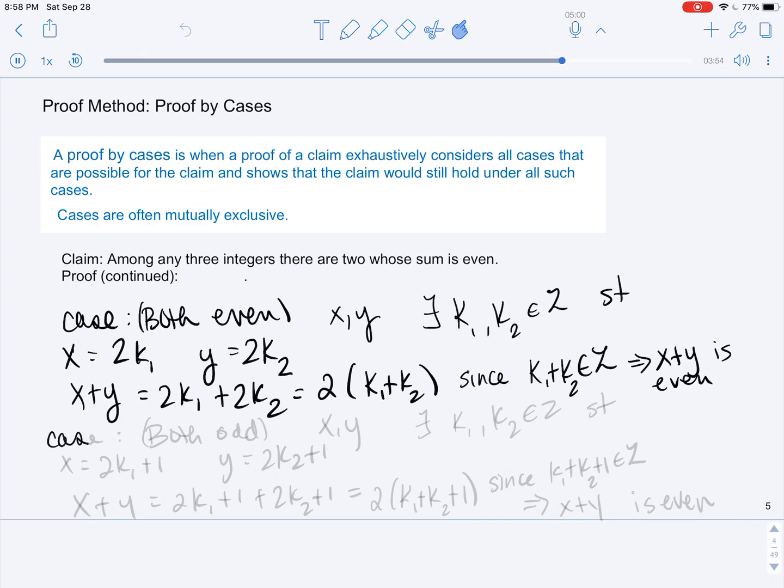Now let's consider the case when they're both odd. Once again, without loss of generality, we're just going to call them X and Y. And there exist K1, K2 in the integers, such that we can write X as 2K1 plus 1, and Y as 2K2 plus 1. When we add them, we're going to get 2K1 plus 1 plus 2K2 plus 1.